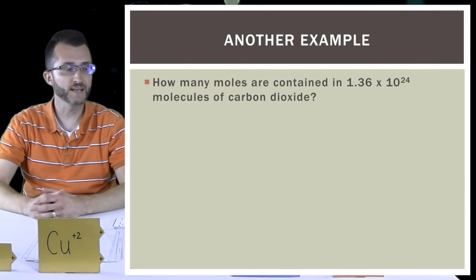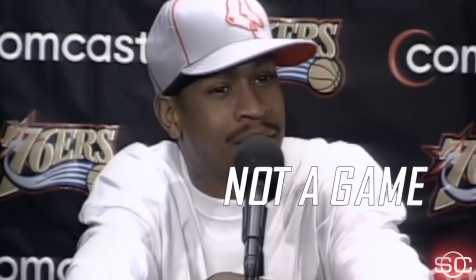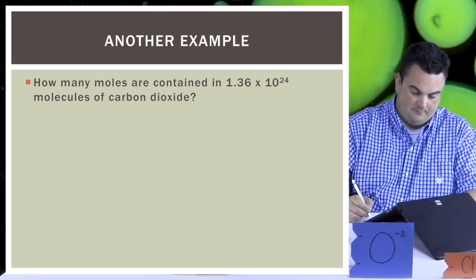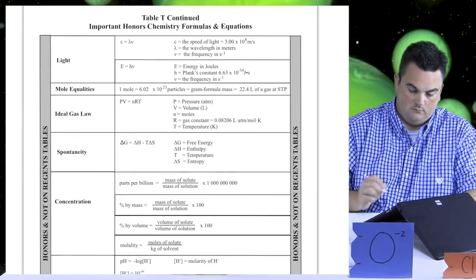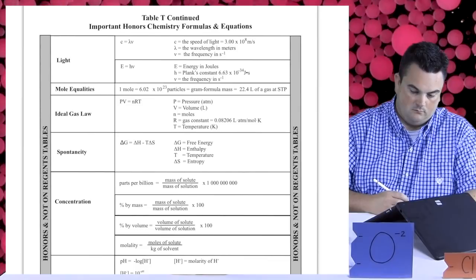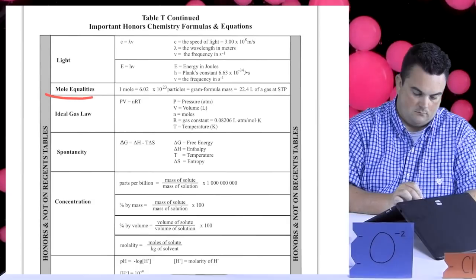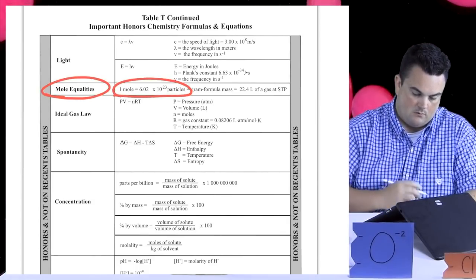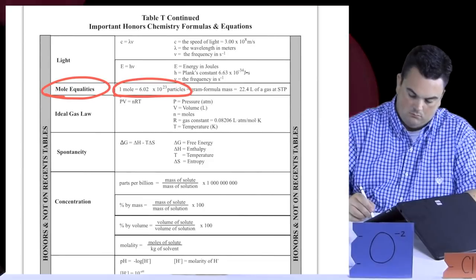We're going to do another example. The question: how many moles are contained in 1.36 times 10 to the 24th molecules of carbon dioxide? I want to take a quick aside to show you that you don't have to memorize the conversion factor we're using. If you go to Table T — the back page of your reference tables — and look under Mole Equalities, you'll see that it's given to you. It says 1 mole equals 6.02 times 10 to the 23rd particles. Don't have to memorize.